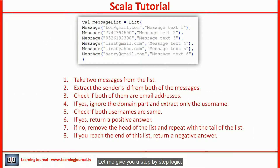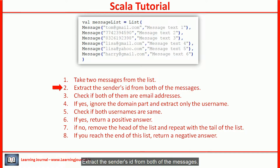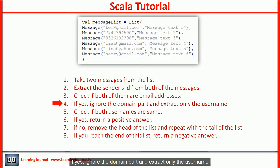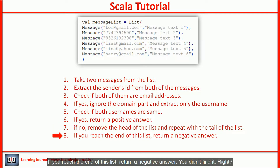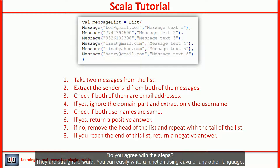Here is the step-by-step logic. Take two messages from the list — deconstruct your list into three parts: the first message, the second message, and the remaining messages. Extract the sender's ID from both messages. Check if both are email addresses; if yes, ignore the domain part and extract only the username. Check if both usernames are the same — if yes, return a positive answer. If no, remove the head of the list and repeat with the tail. If you reach the end of the list, return a negative answer.